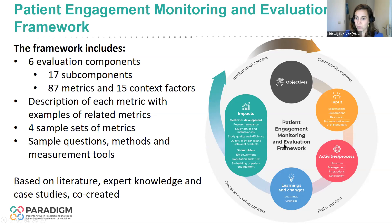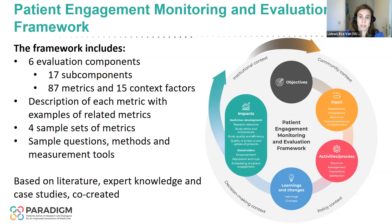For those of you who have seen it, you may be familiar with this picture. The framework includes six components — things you can evaluate, such as input, activities, process, learnings and changes, impacts, and the context. It comes with things that you can measure. For example, one of the components is input, and this is about the expectations, the preparations, the resources and representativeness of stakeholders — basically, do we have the conditions in place to really have meaningful engagement activities?